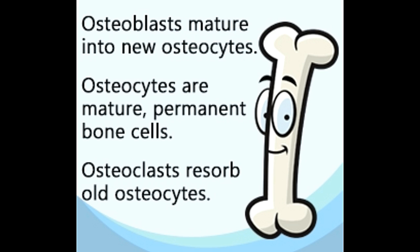Osteoblasts, osteocytes, and osteoclasts are interrelated types of cells found in the bone. Named after the Greek word for bone, these cells perform specific functions within the bone. Here's a summary of the roles the three perform.